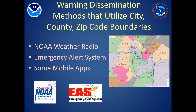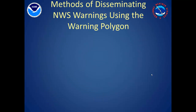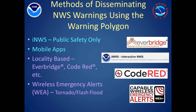EAS and NOAA Weather Radio warn by city or county and are not designed to utilize the polygon aspect of our warnings that we've had for the last decade. In addition, some weather apps utilize zip code boundaries, which occasionally cross city or county boundaries. For the last 15 years, we've seen an emergence of new technologies that provide warning services to individuals, homes, businesses, and in some cases first responders in ways not previously available.